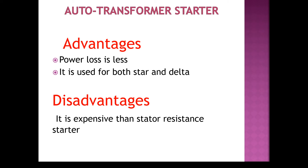The relationship between starting torque and full load torque is: T_starting / T_full_load = x² × (Isc / Ifl)² × sf, where sf is the full load slip. Advantages of the auto transformer starter: power loss will be less and it can be used for both star and delta. Disadvantage: it is more expensive than the stator resistance starter.